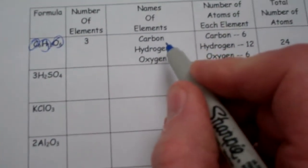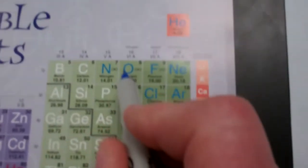What are the names of those elements? Well, you look on the reference table. C is carbon, O is oxygen, and H is hydrogen.